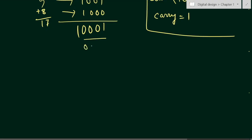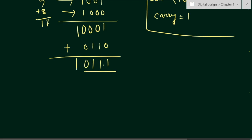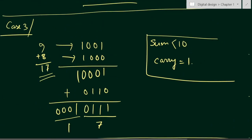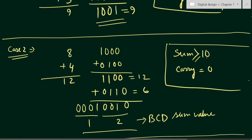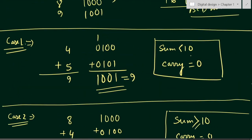We still add 6 (0110): 1+0=1, 0+1=1, 0+1=1, 0+1=1, plus the carry of 1 gives 0 with carry. Grouping into 4-bit groups: we get 0111 (=7) and 0001 (=1), giving 17 — verified correct. Summary: Case 1 (sum < 10, carry = 0): answer is valid as-is. Case 2 (sum ≥ 10, carry = 0): add 6. Case 3 (sum < 10, carry = 1): add 6.